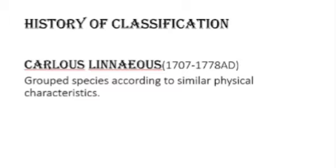The main contribution was by Carlos Linnaeus. Linnaeus grouped species according to similar physical characters and also gave the rules for scientific naming, which we are still using in our taxonomy today.